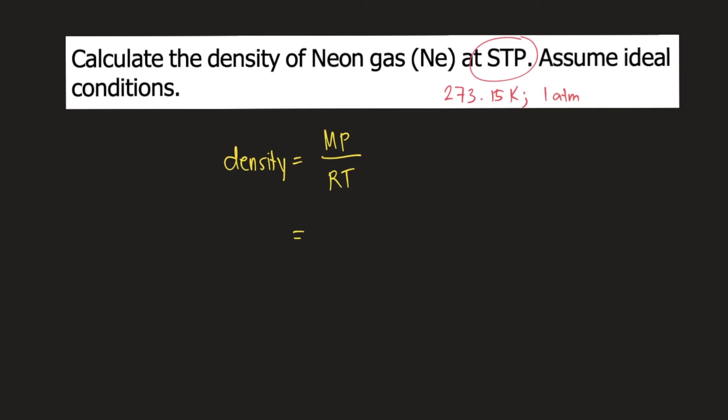Capital M is the molar mass of the gas. In our case, the gas is neon. The molar mass of neon is 20.18 grams per mole.